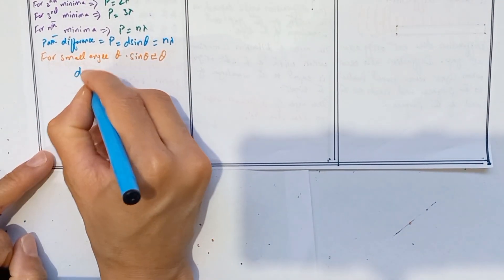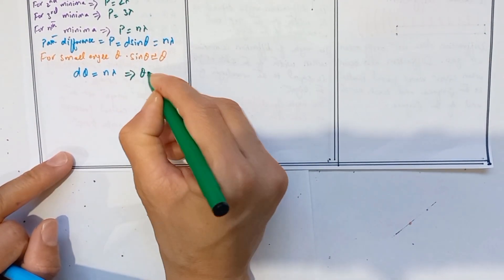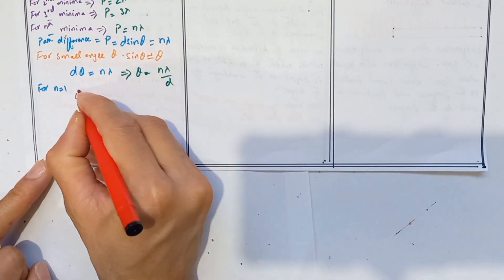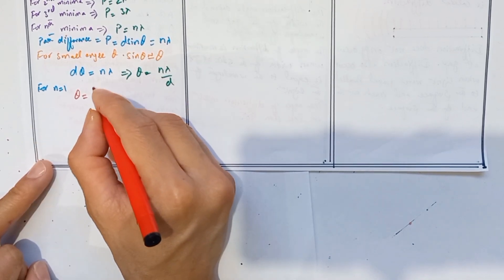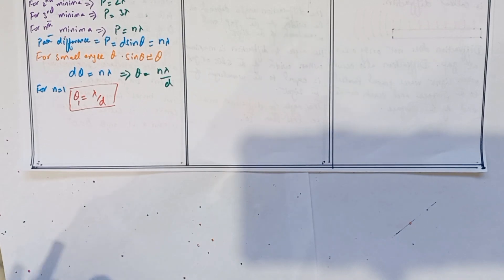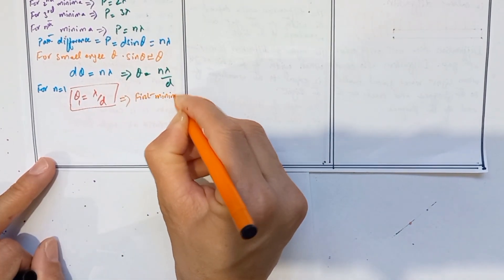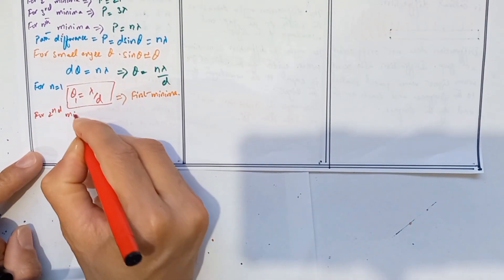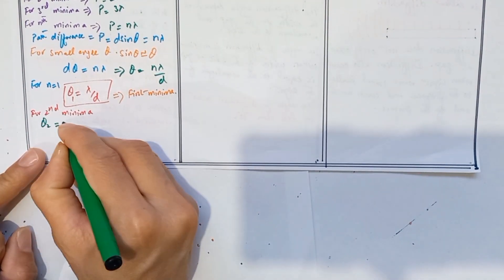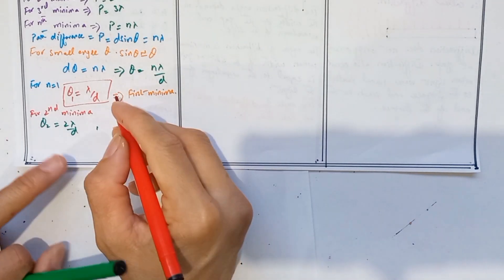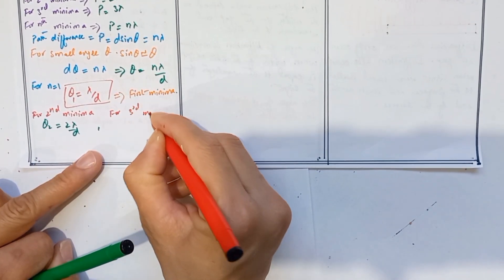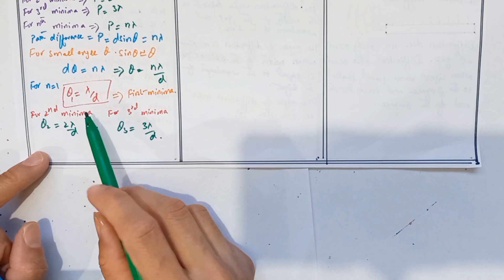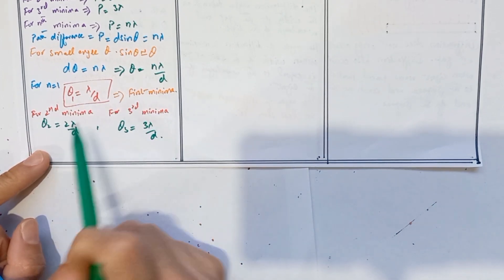Since the path difference is given by d sin theta, we have d sin theta equals n lambda, giving sin theta equals n lambda over d. For the first minima (n=1), theta_1 = lambda over d. For the second minima, theta_2 = 2 lambda over d. For the third minima, theta_3 = 3 lambda over d. Using these angles we can find where dark fringes are produced on the screen.